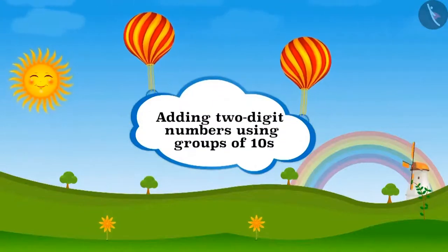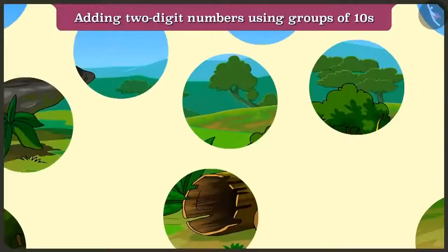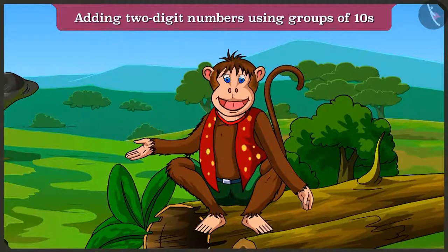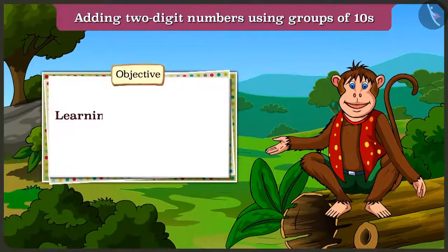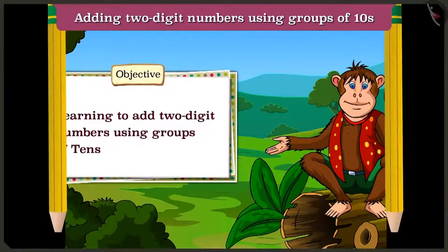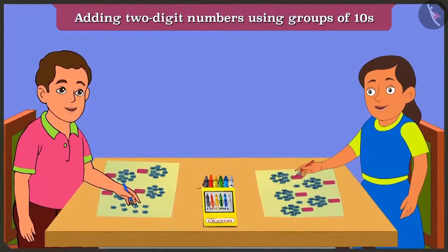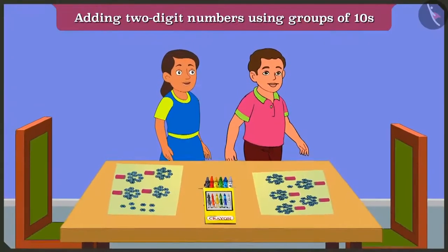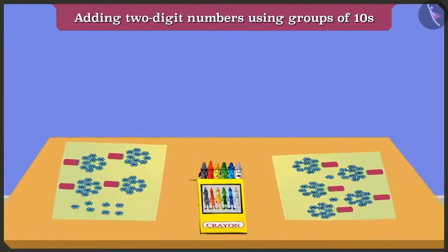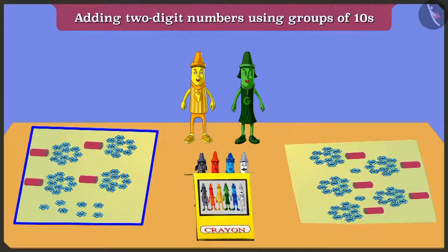Adding two-digit numbers using groups of tens. Friends, today in this video, with the help of groups of ten, we will learn addition of two-digit numbers. Bunty and Bubbly are drawing pictures — looks like they are going to the park to play. The green crayon and the yellow crayon are looking at the pictures made by Bunty and Bubbly. Let us hear what they are talking about.